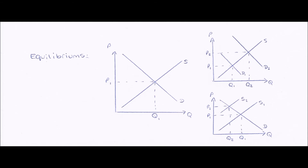The diagram on top shows a shift in the demand curve from D1 to D2 — an increase in demand — resulting in a new equilibrium price of P2, because this is now where D2 and S cross. Similarly, when supply decreases and shifts from S1 to S2, our new equilibrium moves from P1 to P2, because the new equilibrium is where S2 and D cross.